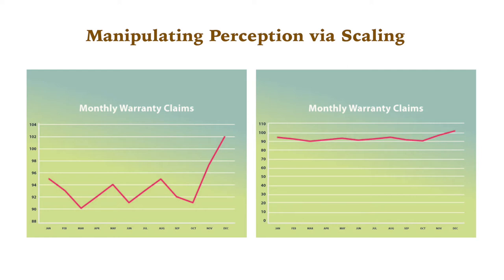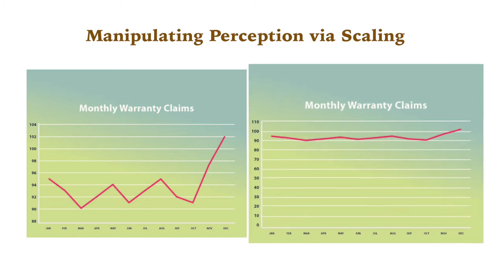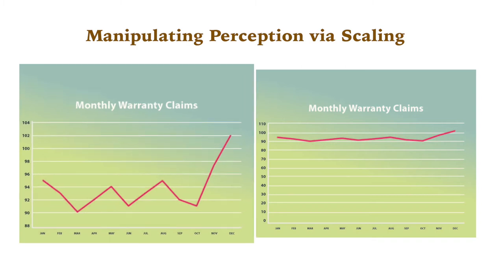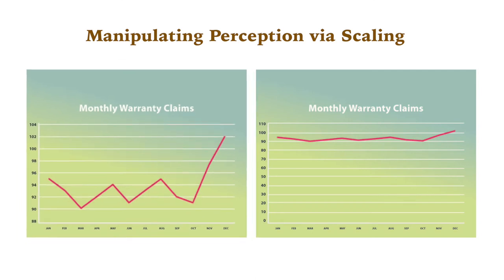Is one presentation more accurate or more truthful than the other? As with every question of communication ethics, it depends on what the audience needs to know. If executives are concerned primarily with overall performance level, the graph on the right emphasizes how far performance is from the ideal of zero. On the other hand, if their primary concern is smoothing out month-to-month variability, the graph on the left emphasizes this phenomenon more dramatically.